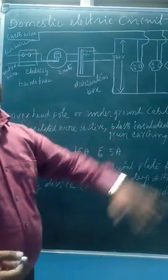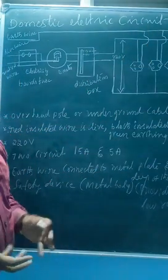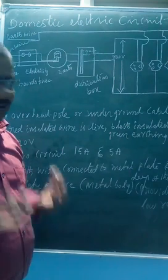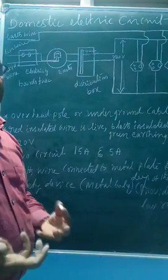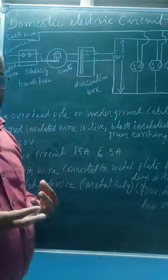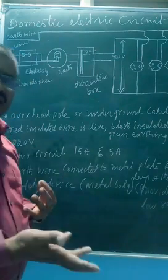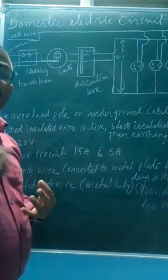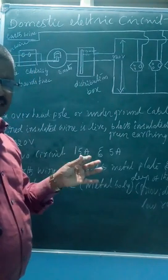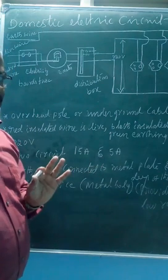The last concept is Domestic Electric Circuit. What is a domestic electric circuit? In our house, we are using alternating current — AC. Maybe it is generated by hydroelectricity, maybe it is generated by thermal electricity. Whatever it is, we are using AC. Remember.